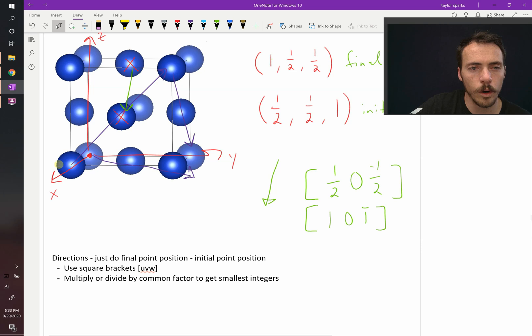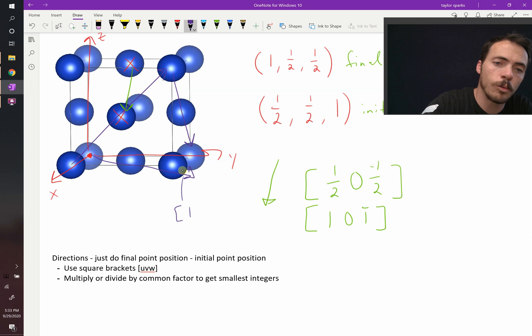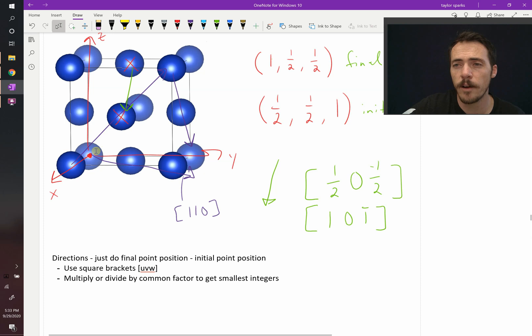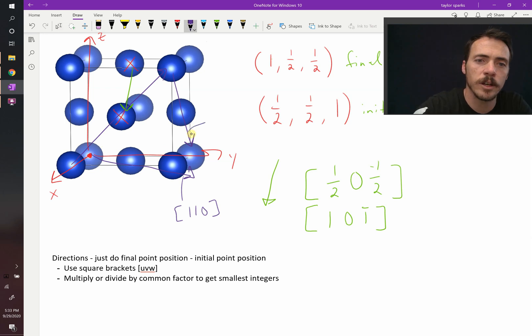Well, it moves forward 1 in the x direction, 1 in the y direction, and nothing in the z. So this direction right there, that is the 1, 1, 0 direction. Notice, I didn't do final minus initial. It's also possible just to look at how far it travels in each of the three directions. Let's do this one over here. This one goes backwards 1 in the x direction. It doesn't move in the y direction, and it goes 1 down in the z direction. So it would be 1 bar, 0, 1 bar.